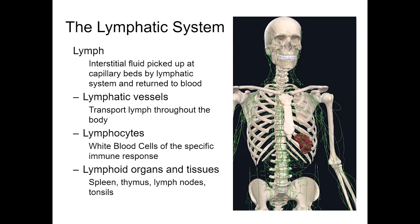For the lymphatic system, we have lymph, which is an interstitial fluid picked up by the capillary beds by the lymphatic system and returned to the blood. We have lymphatic vessels, which are used to transport the lymph throughout the body. We have lymphocytes that carry out specific immune responses, and we have lymphoid organs, which are the spleen, thymus, lymph nodes, and tonsils.